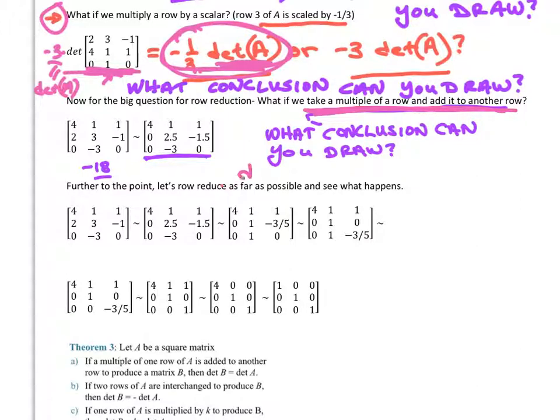And our final conclusion here is that if we have a multiple of a row and add it to another row, the determinant stays the same. That seems weird we're doing a lot more and then the determinant doesn't change.